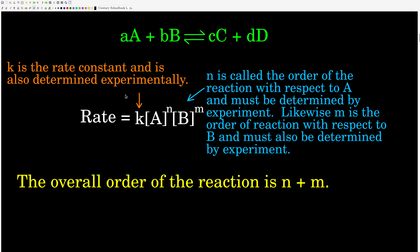In general, the rate law has this form: the rate for this reaction is going to be equal to K, some constant, times the concentration of one reactant raised to some power N — notice it's not the coefficient, it's some other power — times the concentration of the second reactant raised to some other power M. N is called the order of the reaction with respect to A, M is called the order with respect to B, and N plus M is called the overall order of the reaction.